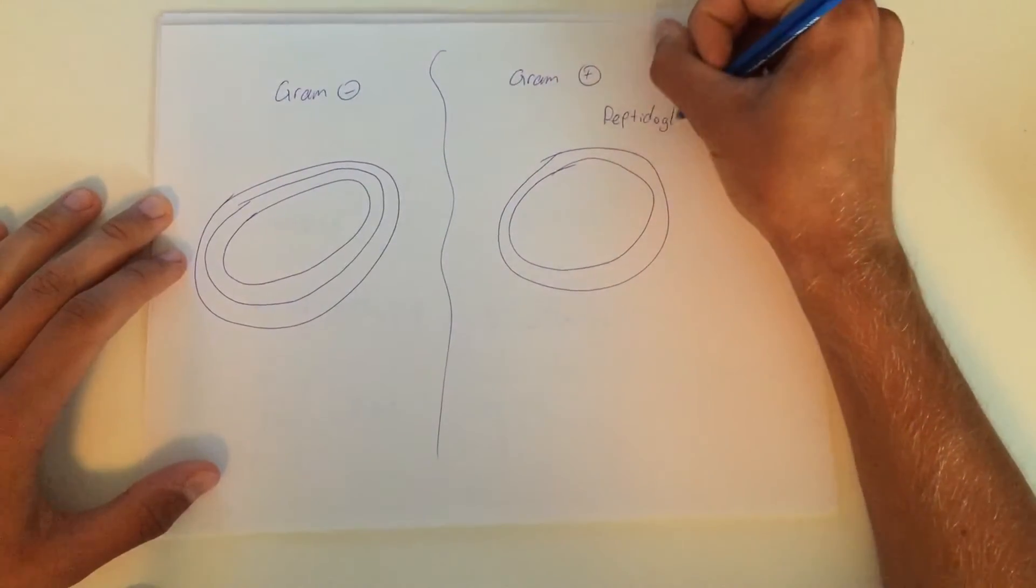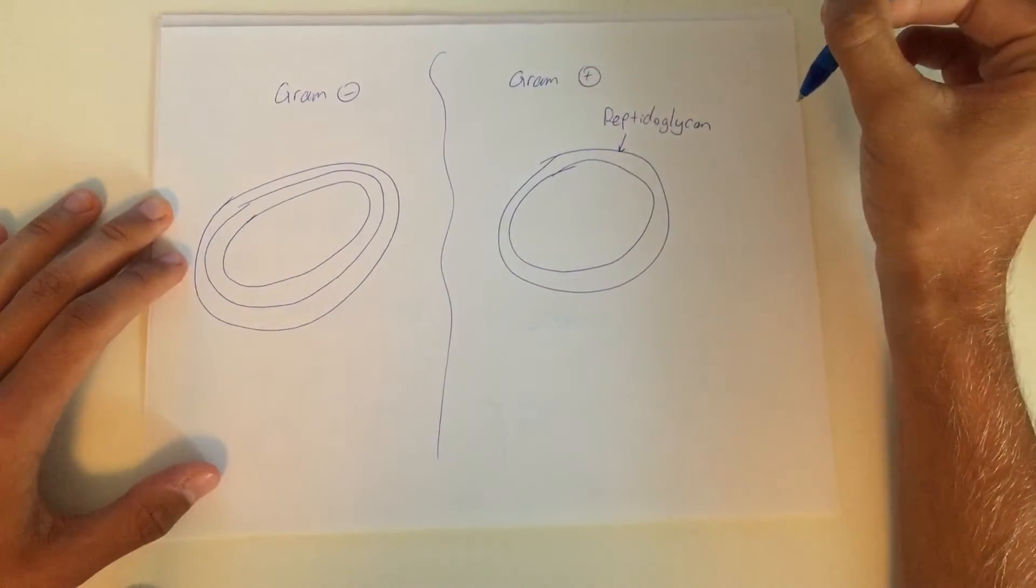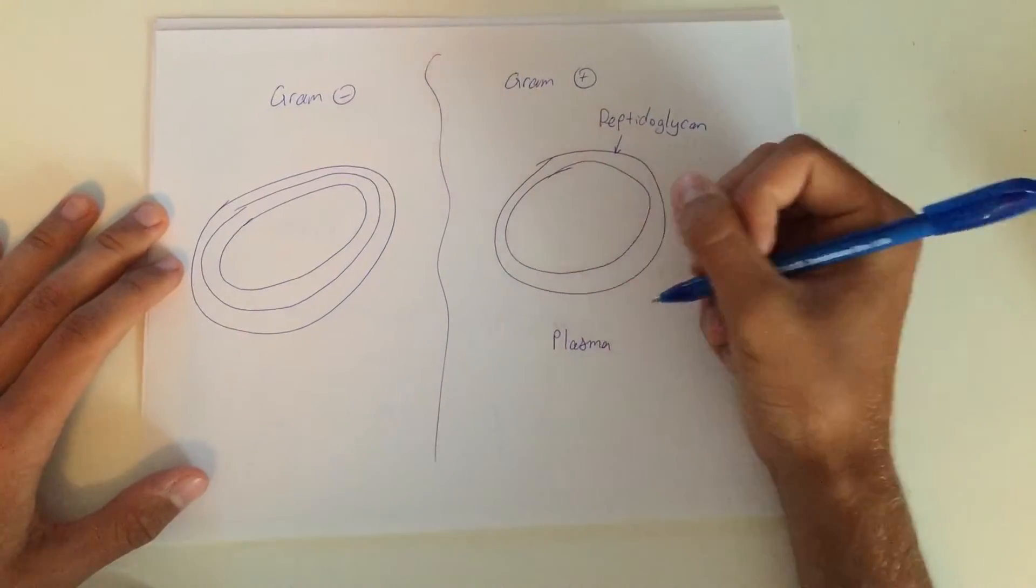So in gram-positive bacteria, the cell wall is composed of two main parts, peptidoglycan and the plasma membrane.